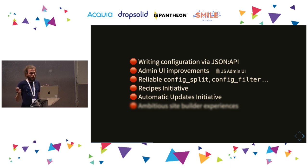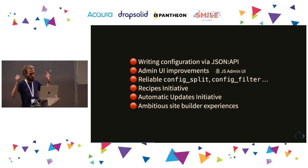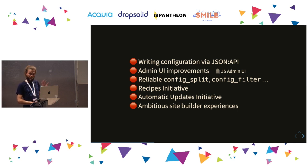Automatic updates: quite a bit of update hooks are about updating configuration. If you get something subtly wrong, your configuration has been updated incorrectly — good luck figuring out in which update hook it went wrong. But if we had config validation, you would know right away when writing the update hook that it's not going to work correctly. And ambitious site builder experiences like the recent field UI improvements — so much pain there was due to the absence of config validation, because all that validation logic was in the forms.